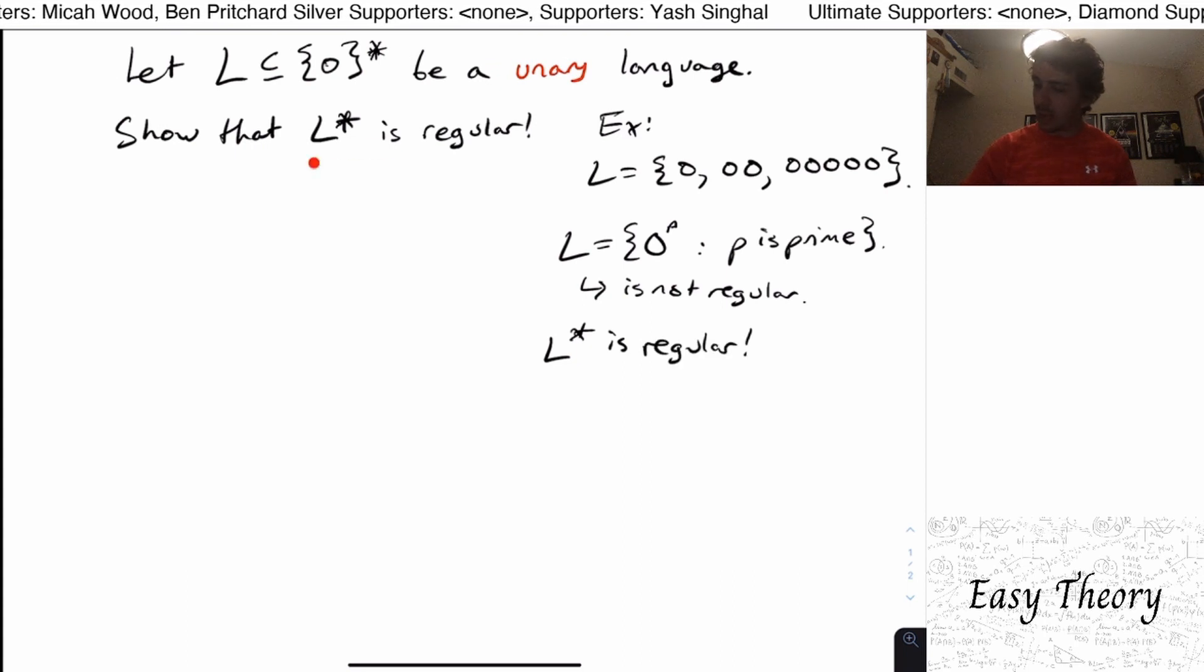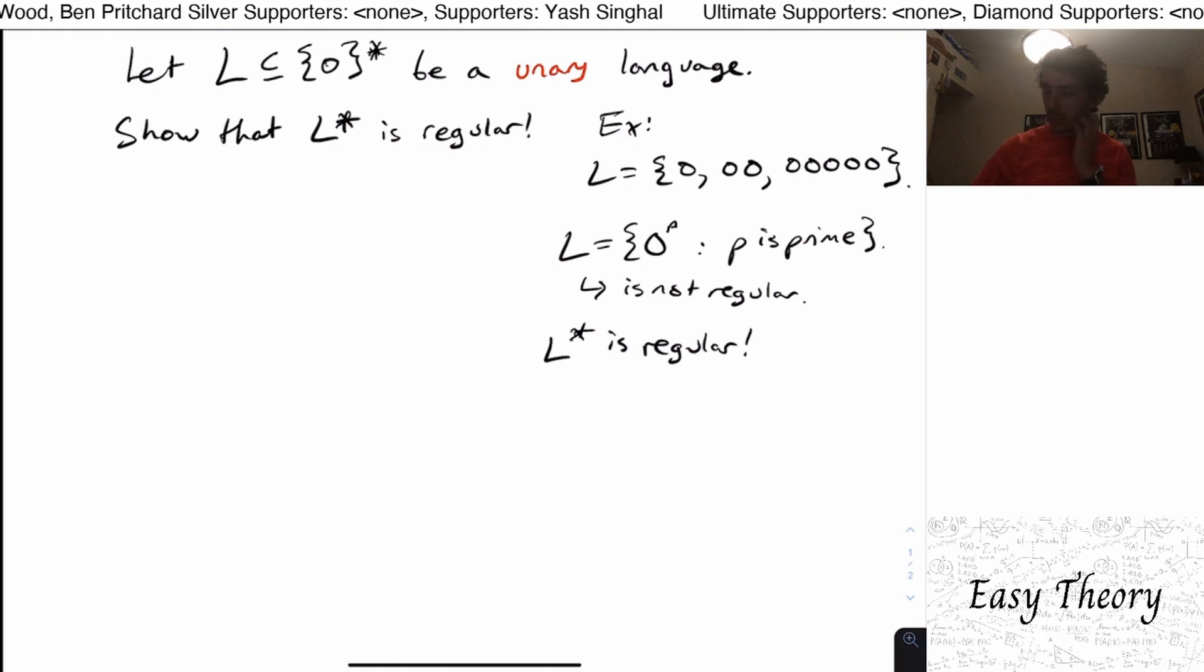So it's actually quite amazing. You can actually find undecidable unary languages like this, and the star of them is always regular according to this. So this is actually a pretty amazing result.